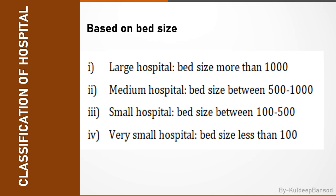If a hospital contains more than 1000 beds, it is named a large hospital. If the bed size is between 500 to 1000, it is medium size. If the bed size is 100 to 500, it is small size. A very small hospital contains fewer than 100 beds.